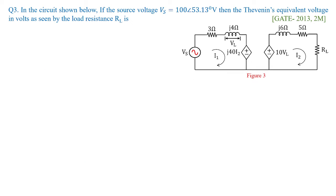Next problem is a very interesting problem. In figure 3, if the source voltage Vs is equal to 100 at an angle 53.13 degrees volts. This is the value given in the polar form. Then Thevenin's equivalent voltage in volts as seen by the load resistance RL is, this was asked for 2 marks under GATE 2013. A very good problem.